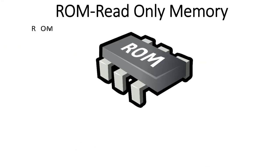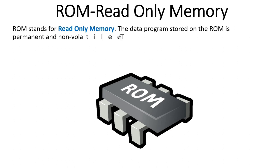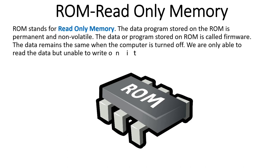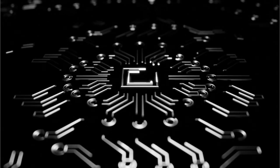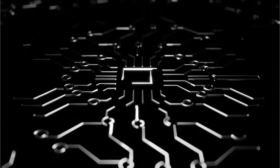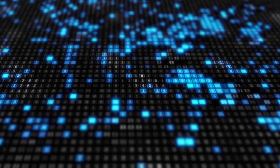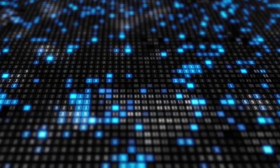ROM is another type of primary memory which stands for Read-Only Memory. It is the non-volatile memory of our computer system, meaning it holds data or programs permanently. It is the permanent type of primary memory that stores the BIOS program or firmware permanently. The data or program from ROM memory cannot be rewritten once it is installed.